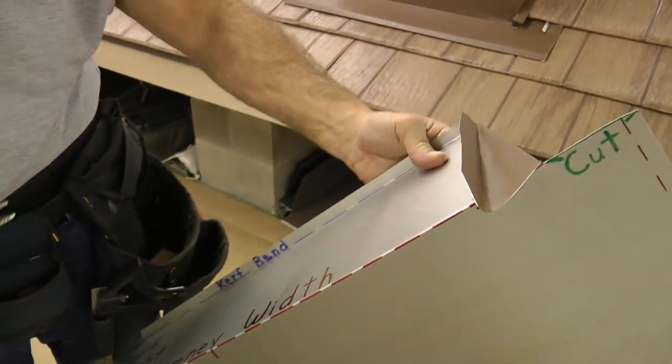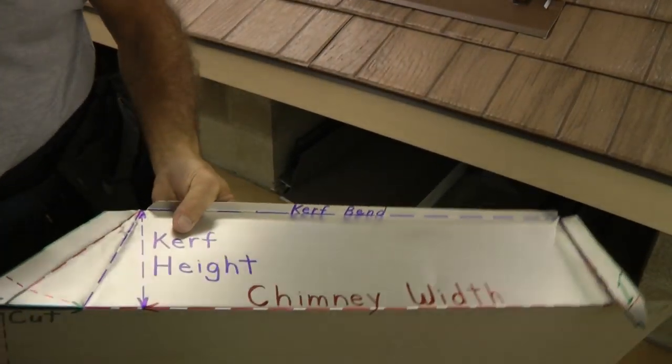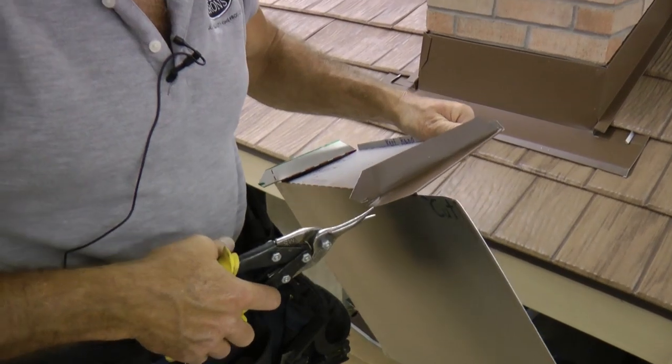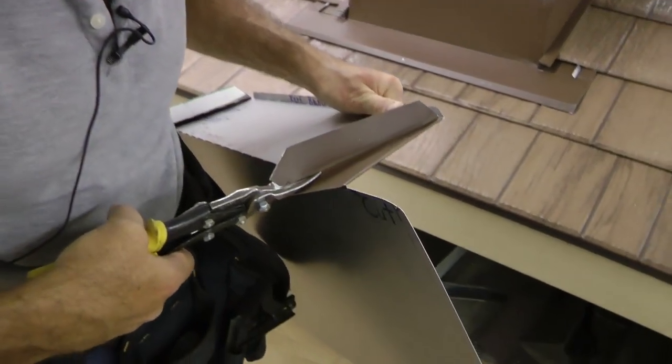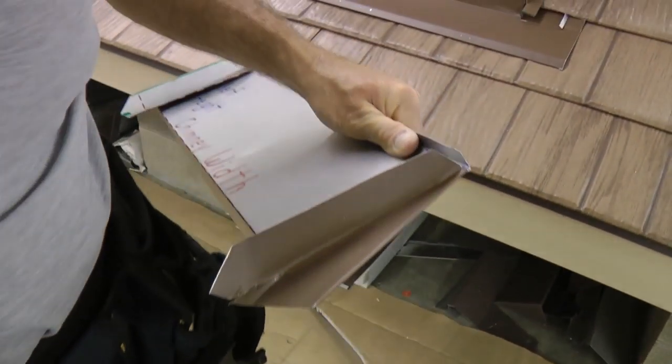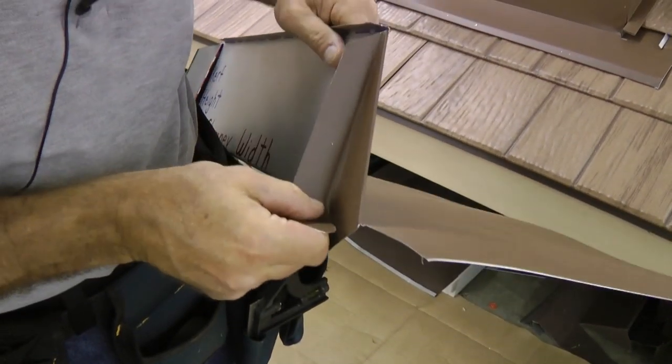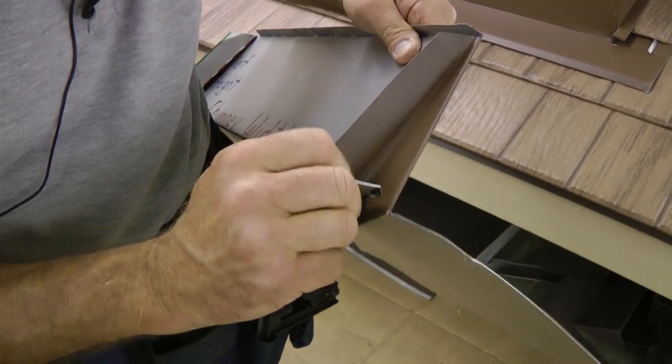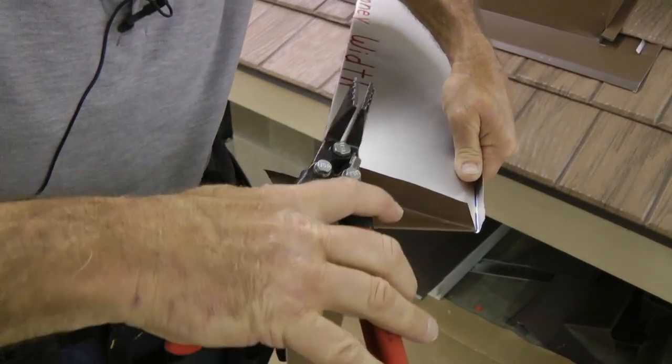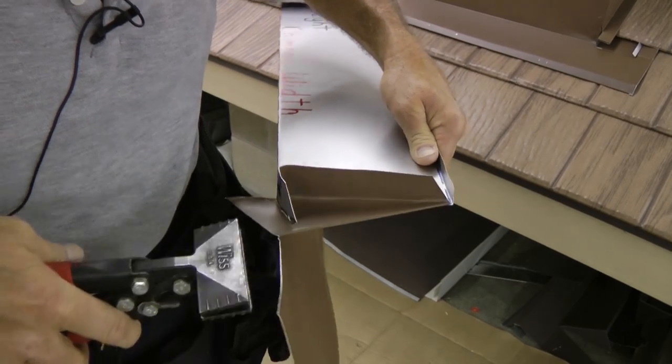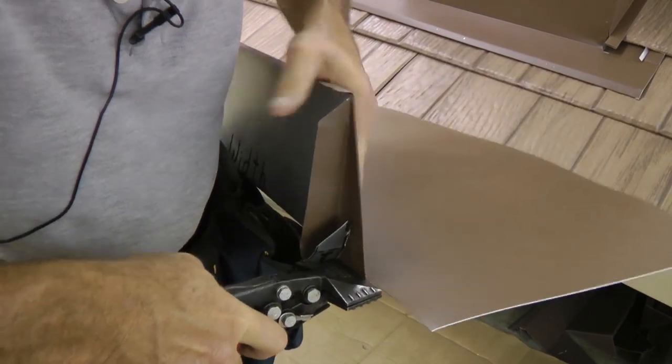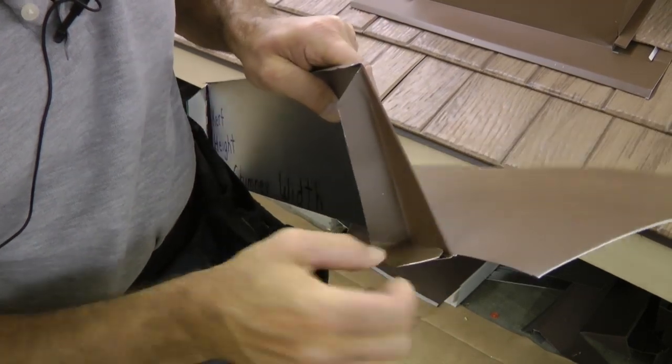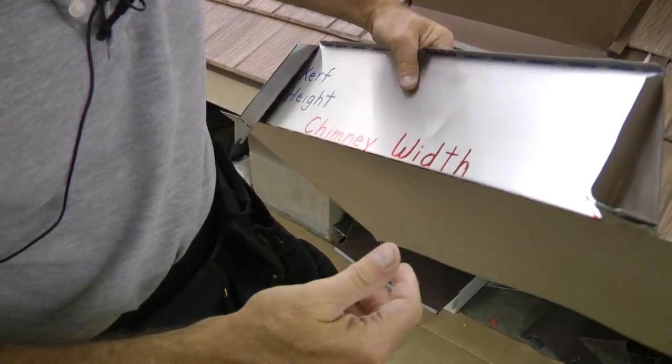This will be the tab that goes along the side wall flashing on the side of the chimney. Here in the corner, I'm going to cut this corner up to the point that would be the roof plane. And then I'm going to bend this up first. And then come back and bend this along the roof line. And you can see how this is going to make for a nice tight waterproof flange there.